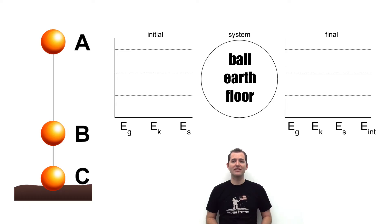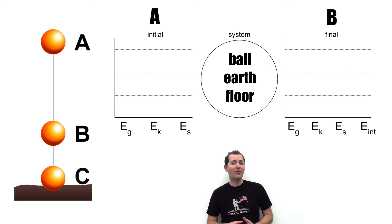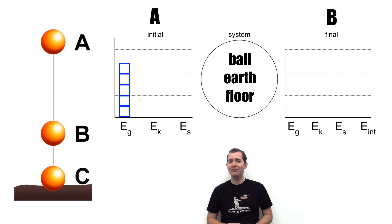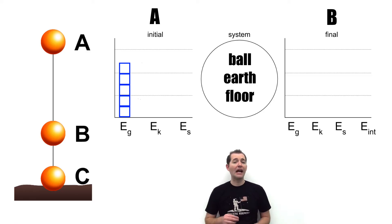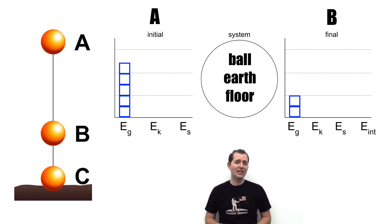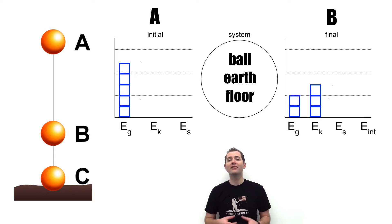We're going to look at the energy differences from Point A to Point B. At Point A, before the object is released, all of our energy present is in gravitational potential energy. We'll draw a bar graph to represent this — let's draw a bar graph with five units of energy. There is no kinetic energy because the object is not yet moving, no spring energy because there are no springs and no compression. At Point B the object is still off the ground, so there is still some gravitational potential energy — let's say two units. The remaining energy has been transferred to kinetic energy, so let's put in three units of kinetic energy. There is still no spring energy present.